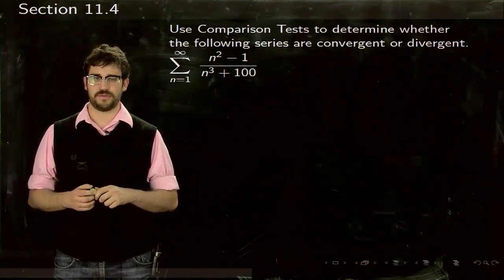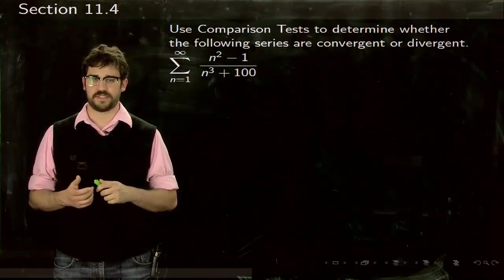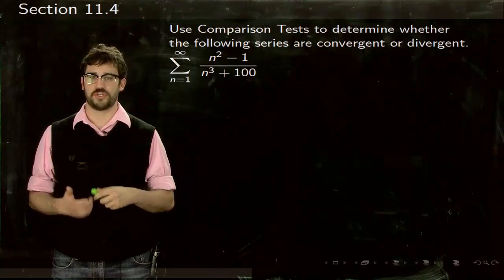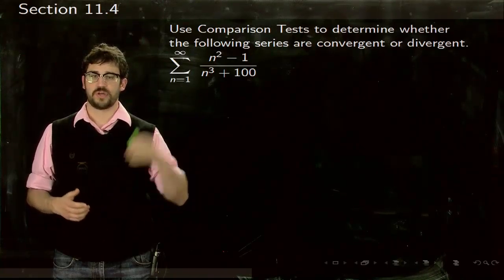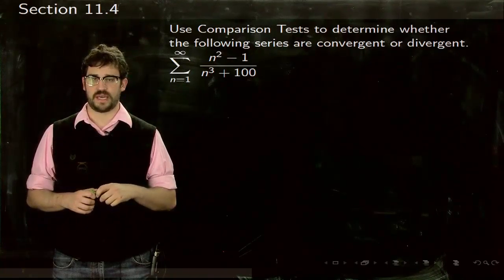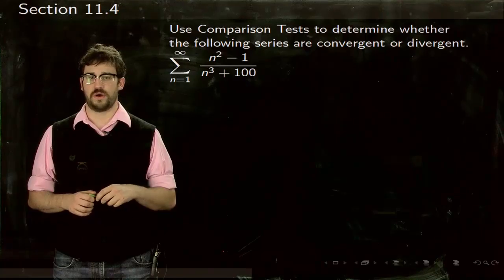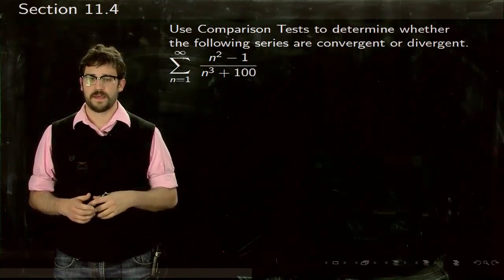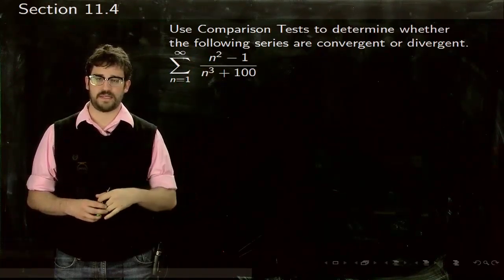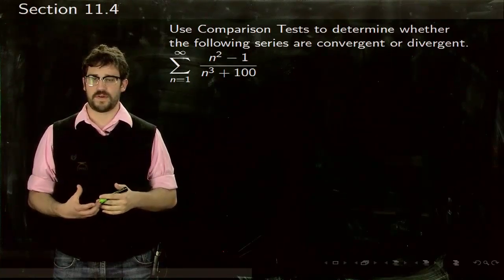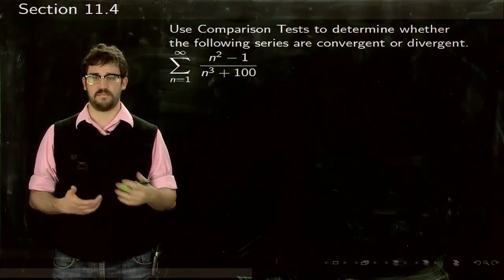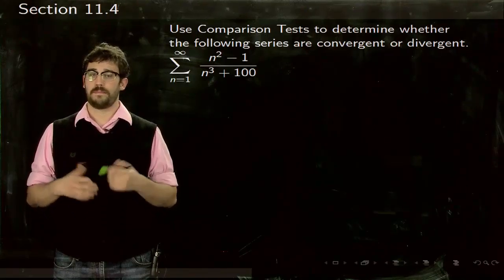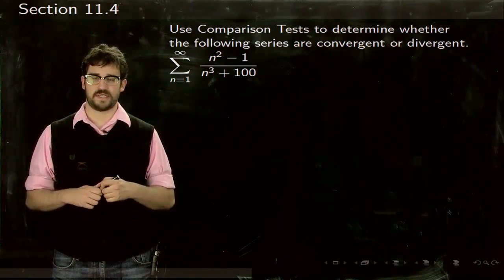Today we're going to use the comparison test to determine whether or not these series converge or diverge. We're given the series (n² - 1)/(n³ + 100). Because of the pluses and minuses, it may be difficult to find an exact comparison with greater than or less than, but we can use the limit comparison test.